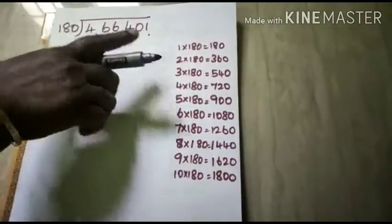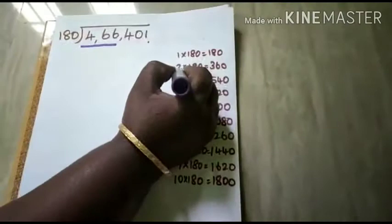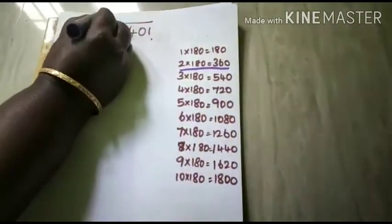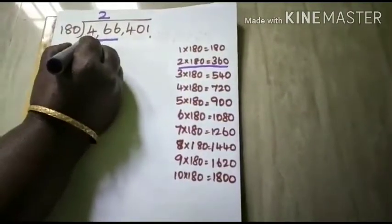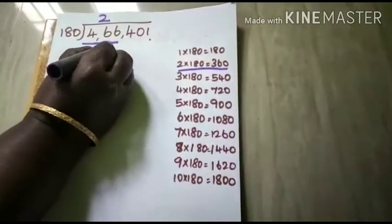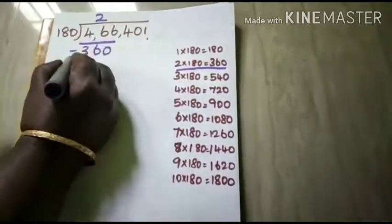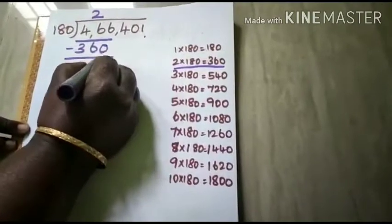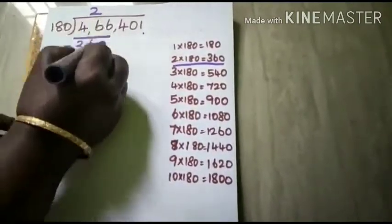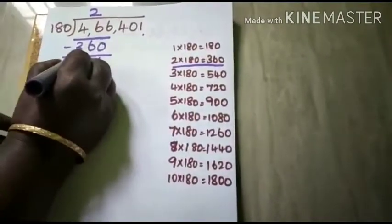466, where does it come? It comes before 540, two times. So 2 into 180 is 360. Subtract. 6 minus 0 is 6, and 6 minus 6 is 0, 4 minus 3 is 1.